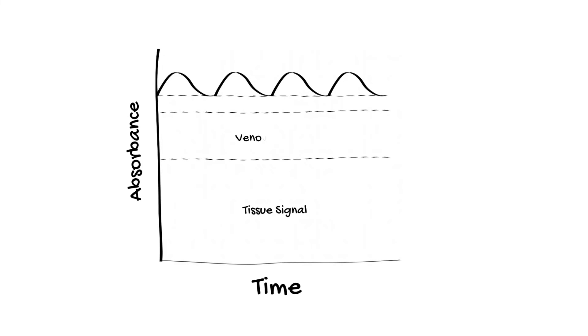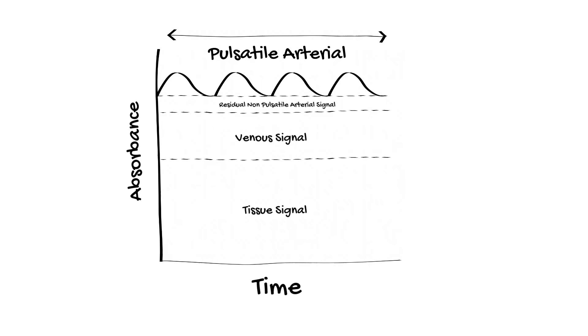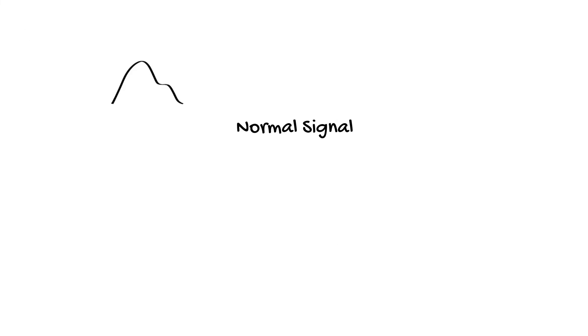The second is that after ambient light and non-pulsatile signal is removed, the pulse oximeter amplifies the pulsatile signal and takes an average over a few seconds before calculating the saturation. This is to try and identify and compensate for any movement artifact that has occurred.